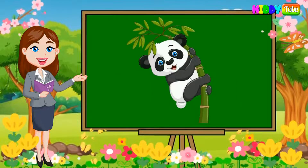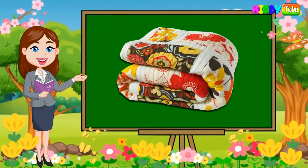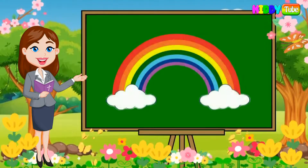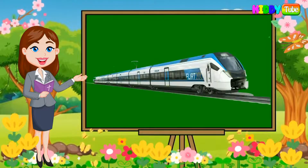P is for panda. Q is for quilt. R is for rainbow. S is for stars. T is for train.